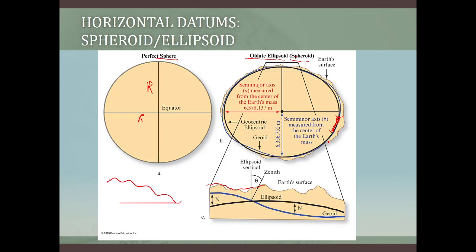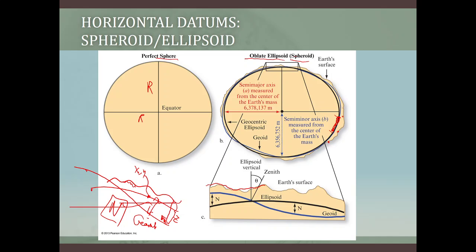We now have three surfaces: the actual surface, the ellipsoid that tries best to model this surface, and something called the geoid — which we'll learn about in the next video. The geoid is used for vertical referencing (elevation, z), while the ellipsoid is used mainly for horizontal referencing (x and y). At any point there is a separation between these two surfaces, which we call N — the geoid undulation.